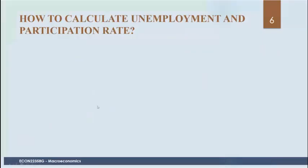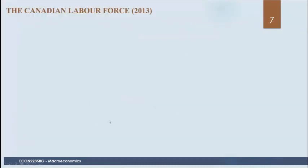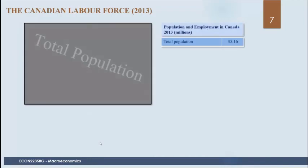These are the formulas for the participation rate and the unemployment rate. This is a good way of seeing how Statistics Canada calculates the unemployment rate. We start with the total population — in Canada in 2013, we had 35.16 million people.